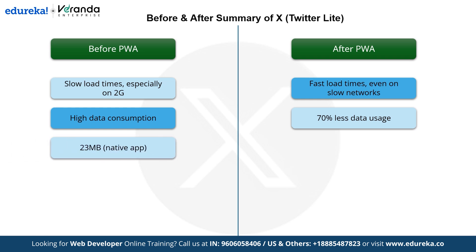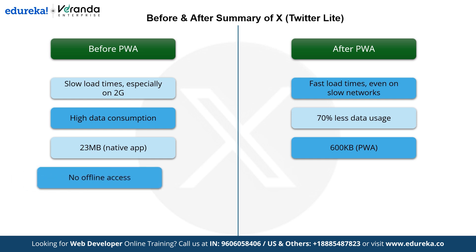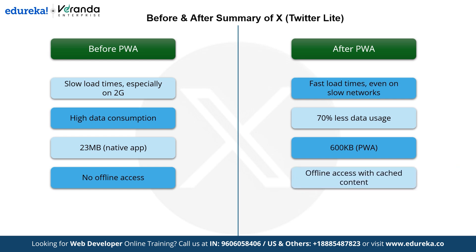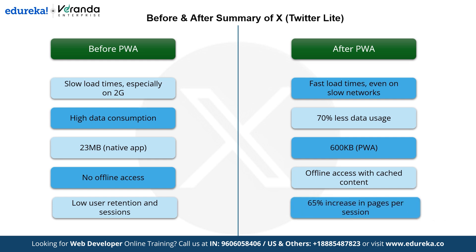Before adopting progressive web apps, the native app required 23 MB of storage space, which was a concern for users with devices that had limited storage capacity. After implementing progressive web apps, the app size was reduced to 600 KB, making it lightweight and accessible for users with even low-end devices. Before, users couldn't access the app without an internet connection as the native app lacked offline functionality, limiting its usability. After implementing progressive web apps with offline access enabled through cached content, users could continue engaging with the app even when not connected to the internet. Before progressive web apps, user retention was low and engagement suffered due to inconsistent performance, leading to fewer pages viewed per session. After implementing progressive web apps, user engagement surged with a 65% increase in pages viewed per session, showcasing the app's improved reliability and appeal.